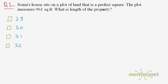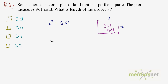It is given that Sonia's plot is 961 square feet and the plot is a square plot. So, the area is 961 square feet. As it is a square, the length of sides would be equal. We know that the area of a square is equal to side squared. So, x squared is equal to 961. To find x, we need to take the square root of 961. The length of the property is x, so let us find the square root of 961 by division method.